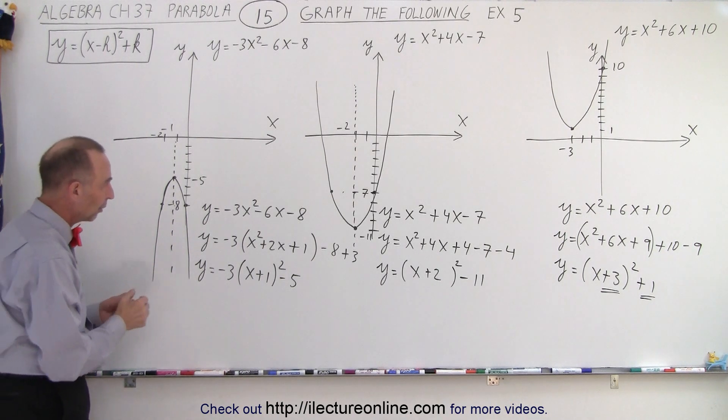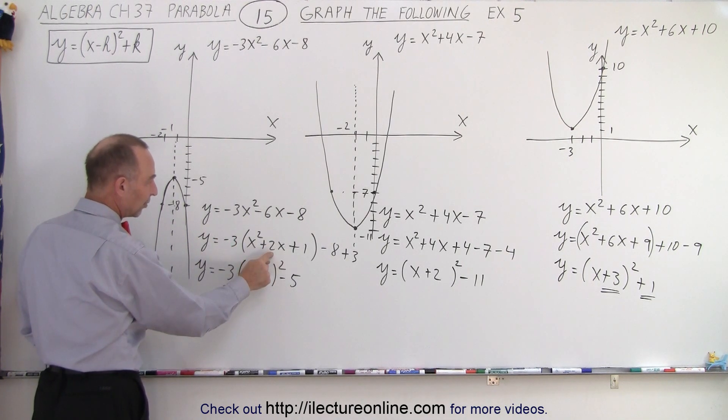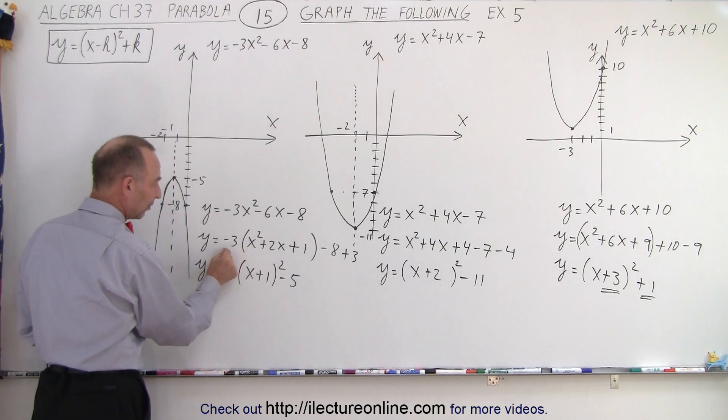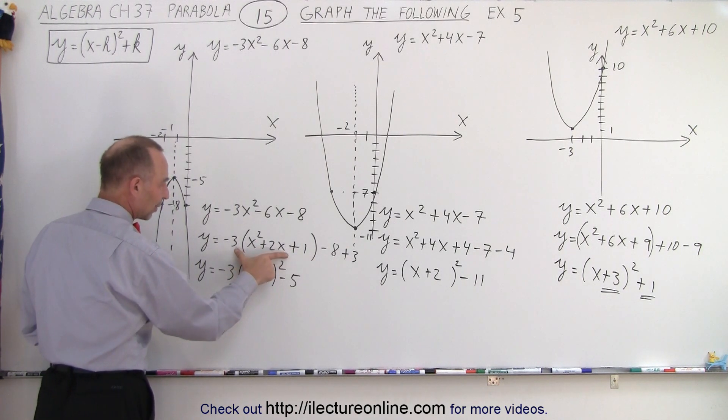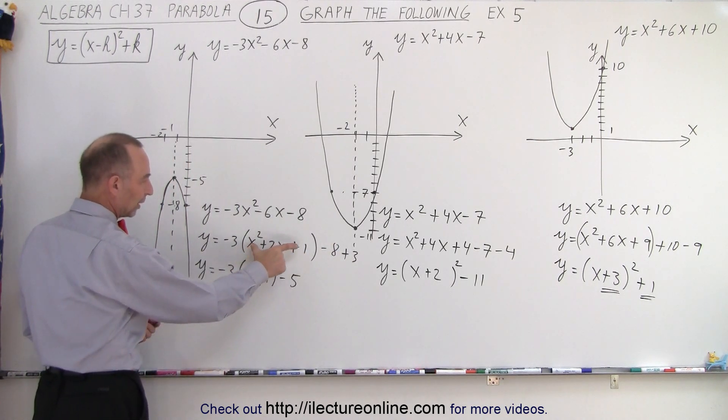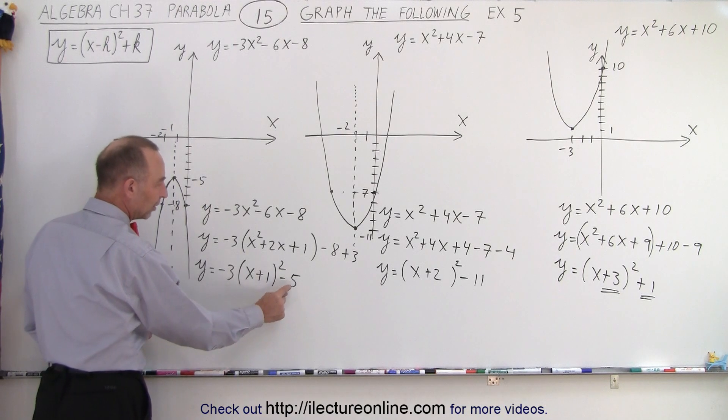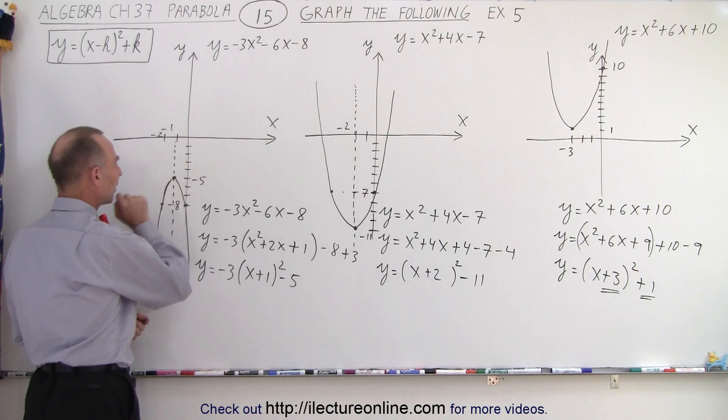Again, what we did was we factored out a negative 3 to have a positive x squared. If I factor out negative 3 from here, I get a plus 2x. I take half of 2, which is 1 squared, I get plus 1. But the negative 3 times plus 1 is like a negative 3, so I have to add a positive 3. Then I can write this as a square of a binomial. It shifted to the left by 1, down by 5, which is where we find the vertex.